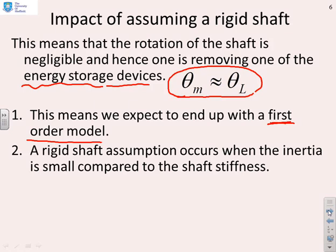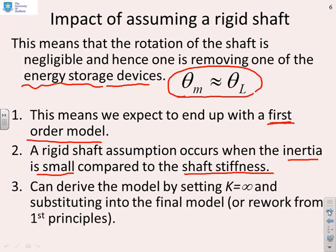Now, when we assume a rigid shaft, what essentially we're doing is we're saying the inertia is small compared to the stiffness of the shaft, and that's fairly typical. And what we can do is we can derive the model by setting the spring constant for the shaft equal to infinity. And I guess that's an approximation, but it's good enough. Alternatively, you can rework everything from first principles. And we'll do both, but relatively briefly.